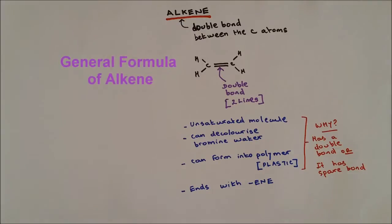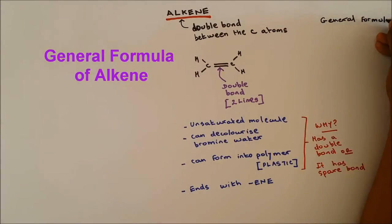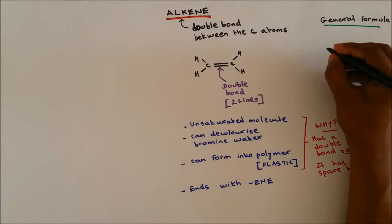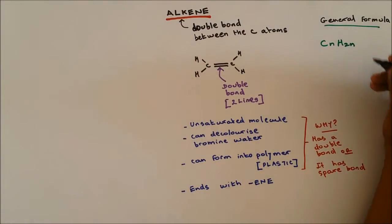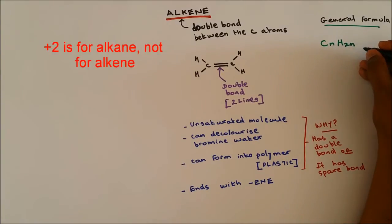Now let's take a look at the general formula. The general formula of alkene is CnH2n. We don't put the plus 2 like for alkane. There is no plus 2 for alkene, it's just CnH2n and it's very important.